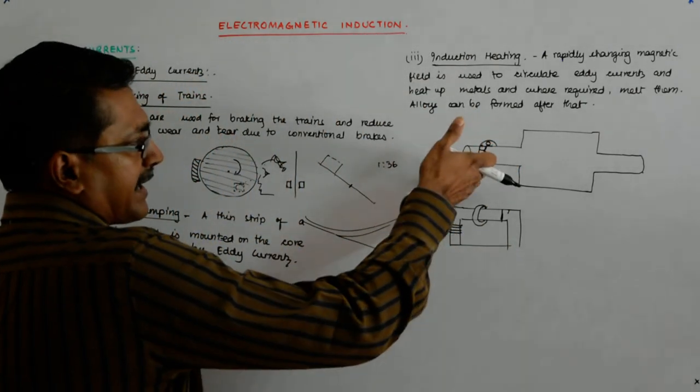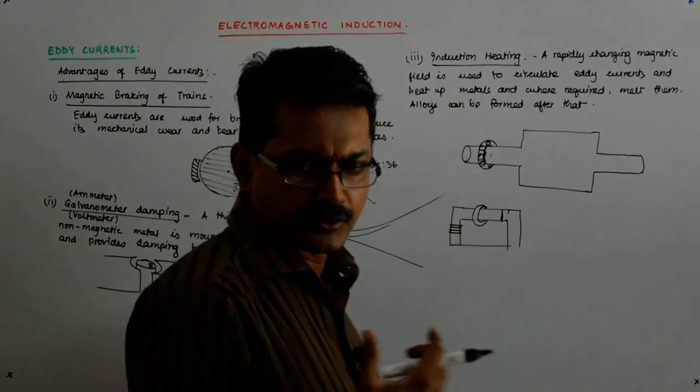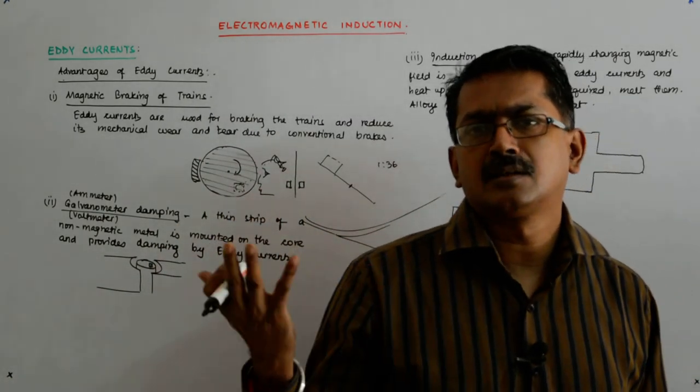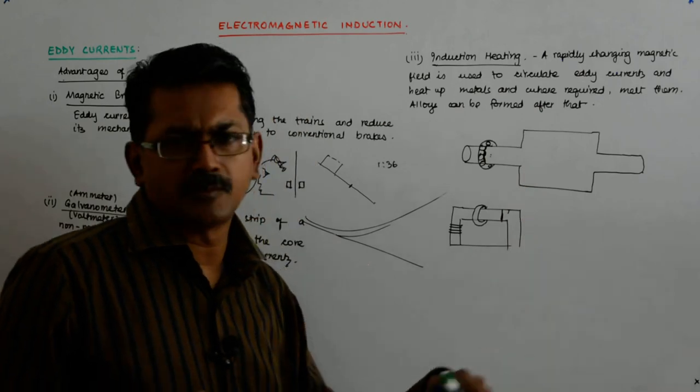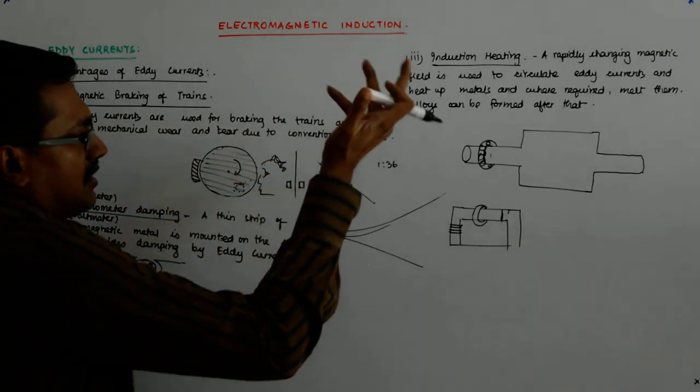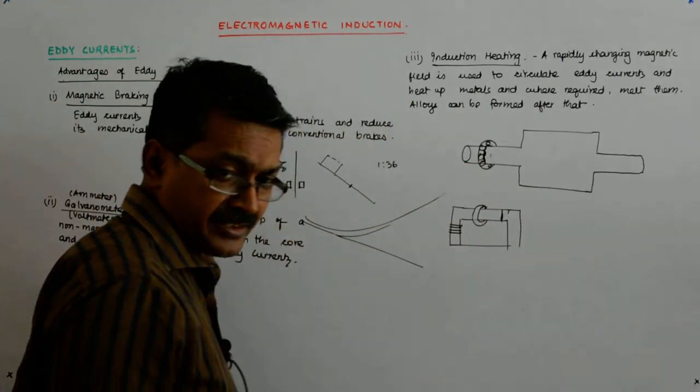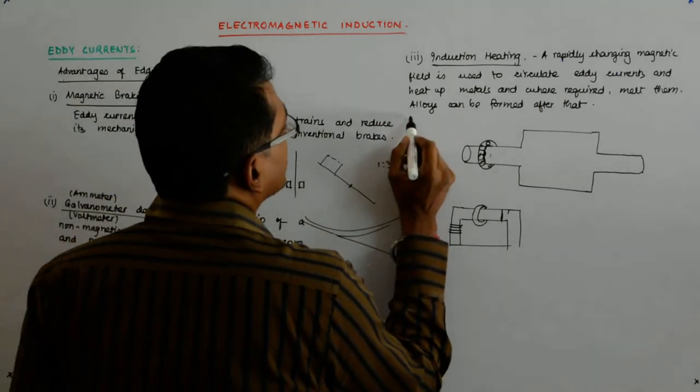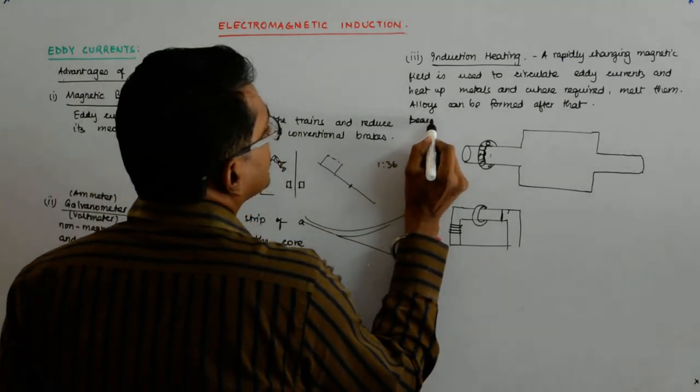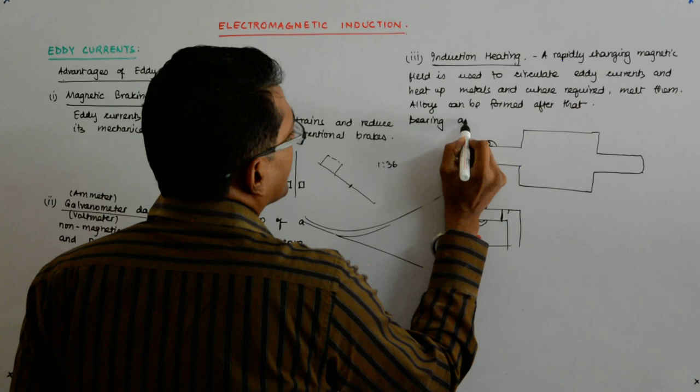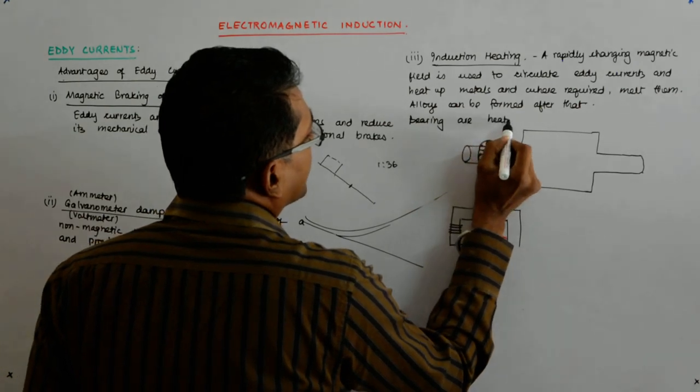Similarly for taking it off the shaft, you have to do the same thing. But there, since it is in the motor and you cannot mount it here, so some oil bath is used, and that also is heated by induction heating. So bearings are heated by induction heaters and fixed on to the shaft.